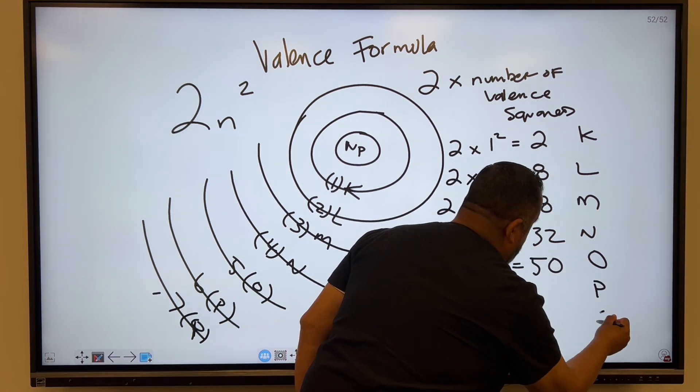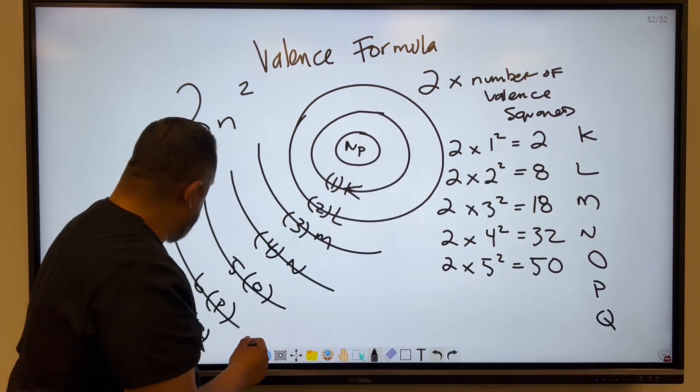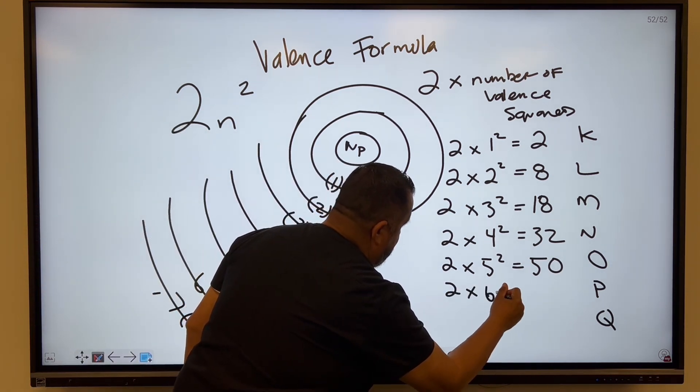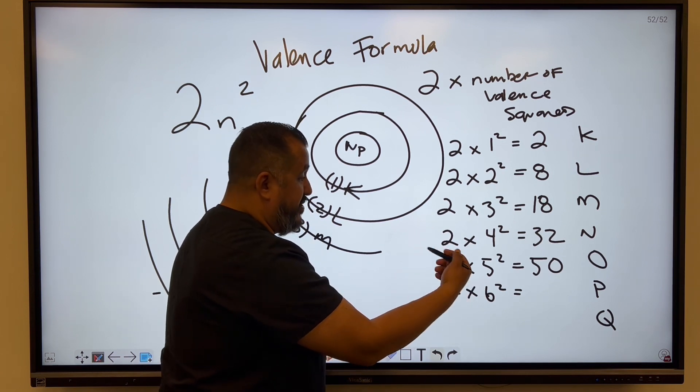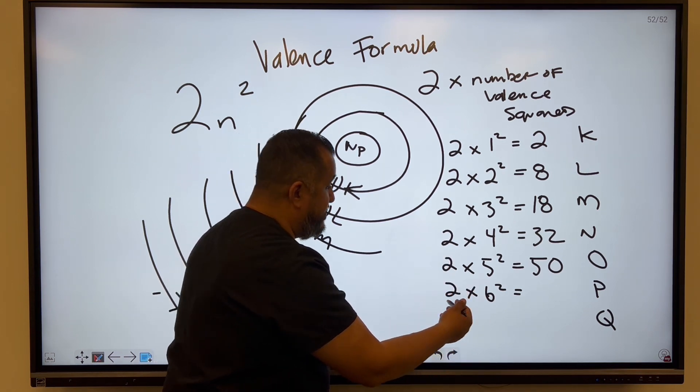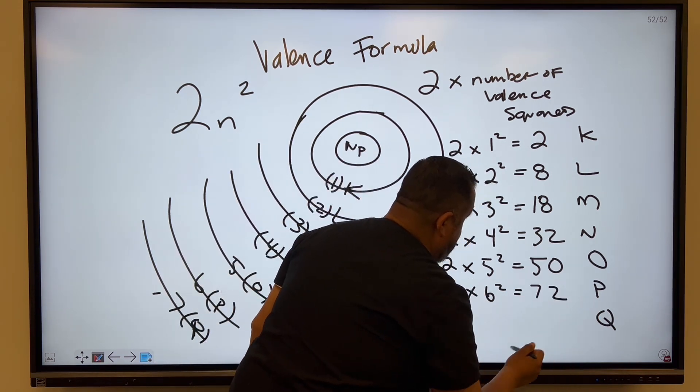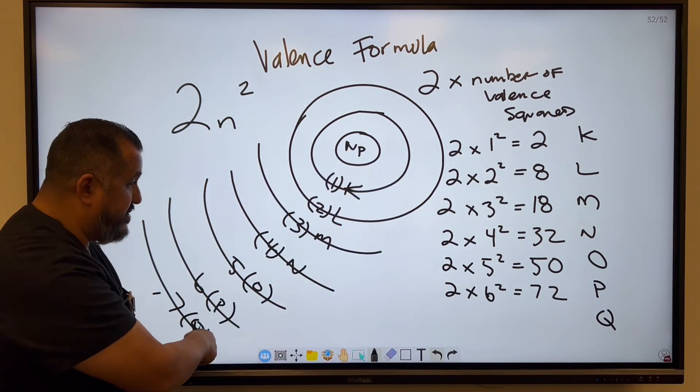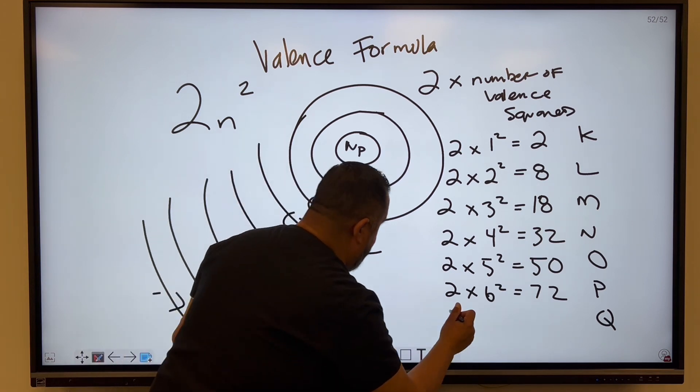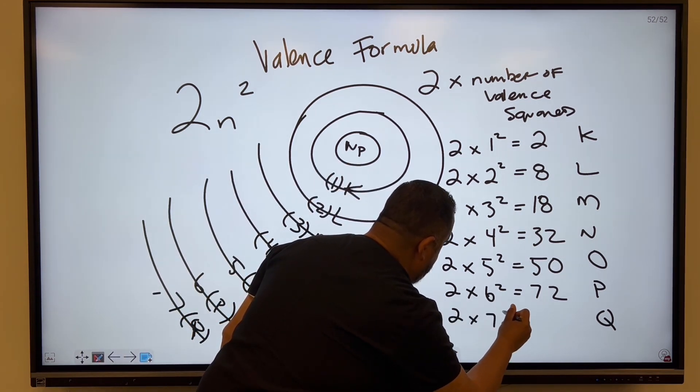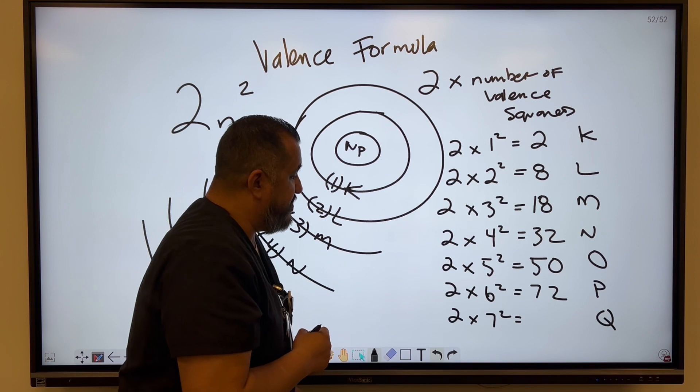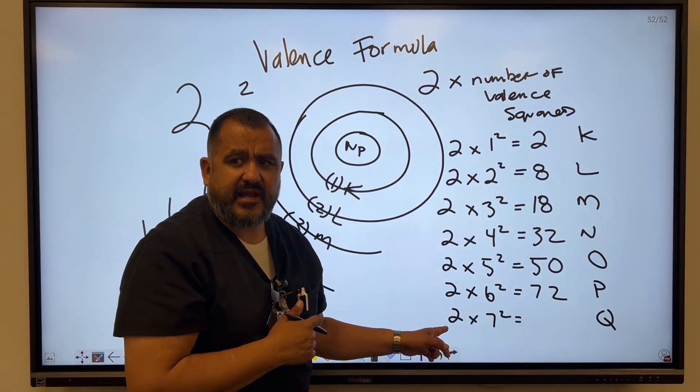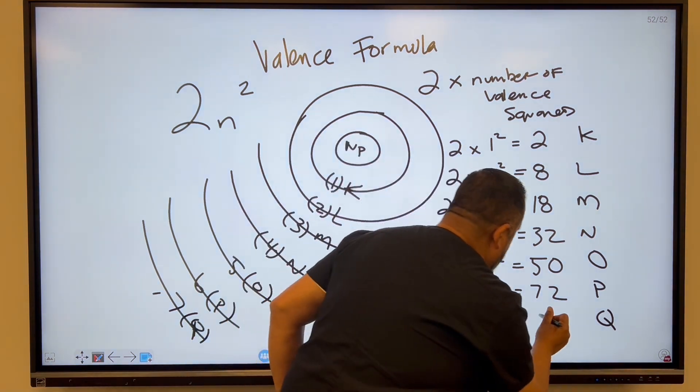We got P and we got Q. We got 2 more to go. So 6, we're going to do 2 times 6 squared. So 6 times 6 is 36 times 2 is 72. And then we got the last one here. We got Q. That's 7. So 2 times 7 squared. We got 7 times 7 is 49. Times 2 is 98.